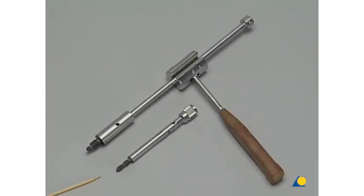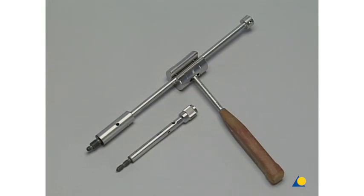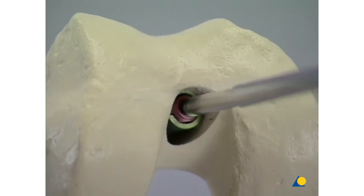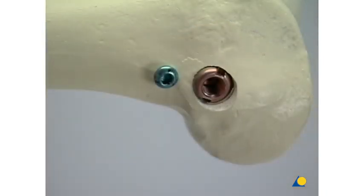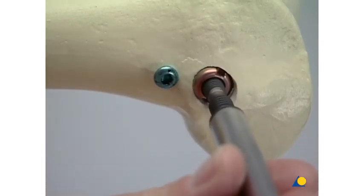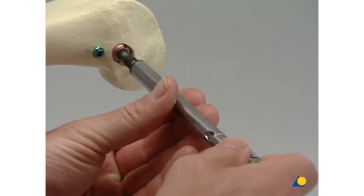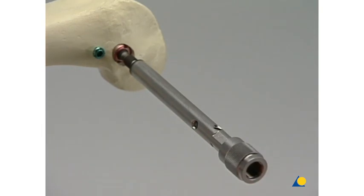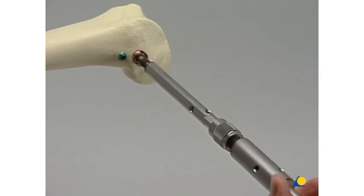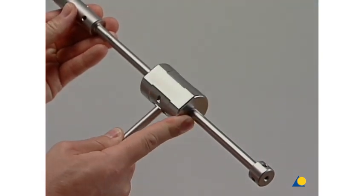Needed for the removal of the DFN are an extraction screw and a hammer guide with slotted hammer. First, the end cap is removed. Then the extraction screw is attached to the spiro blade and tightened. After that, the hammer guide is mounted onto the extraction screw. The blade can now be removed with the slotted hammer.